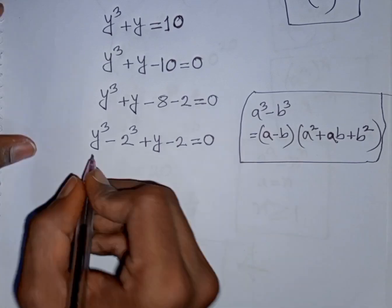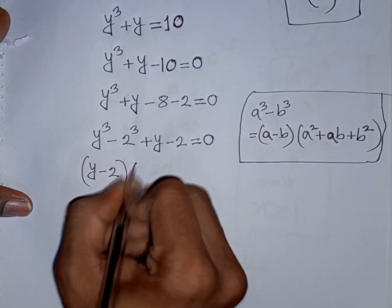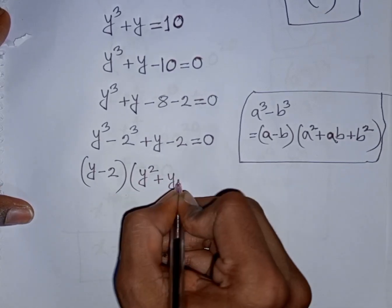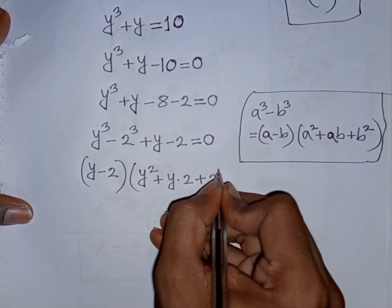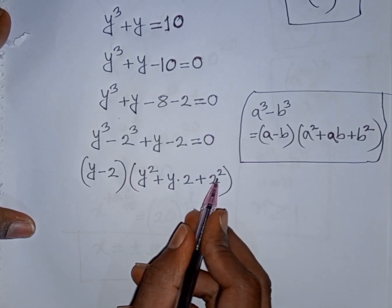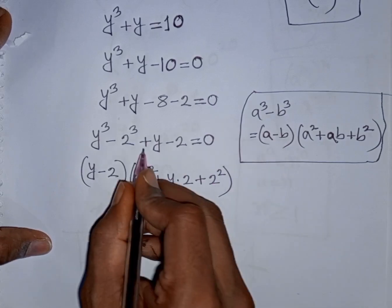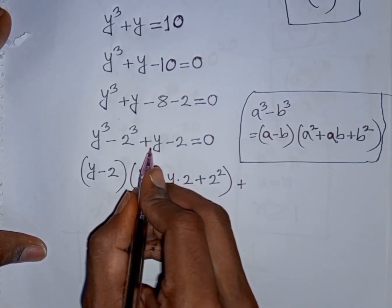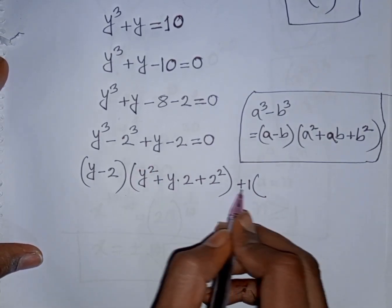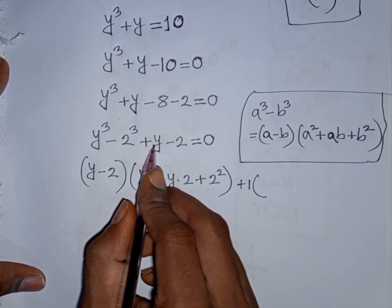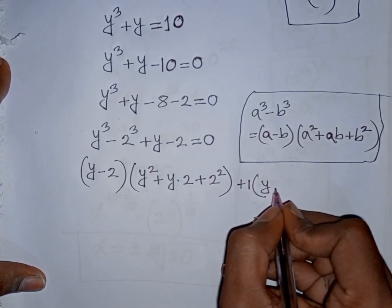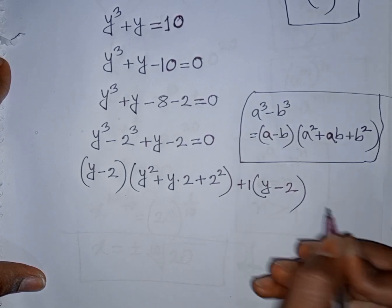Applying the formula, we write y minus 2 times y squared plus 2y plus 4, then plus we take the common factor from the remaining terms. Taking 1 as common from y minus 2 gives us plus 1 times y minus 2, equal to 0.